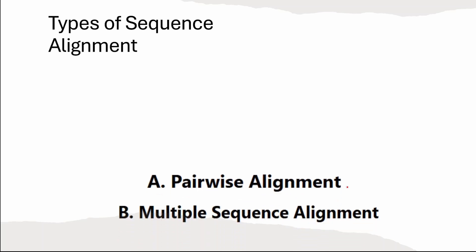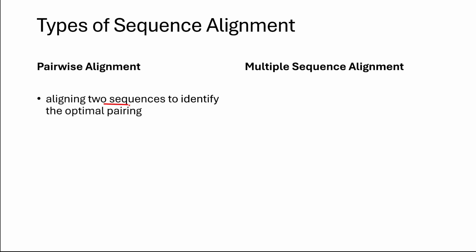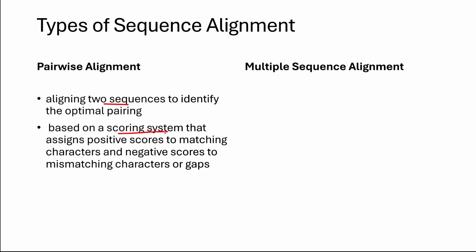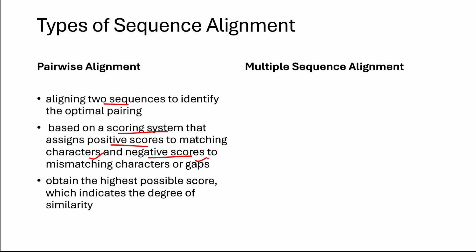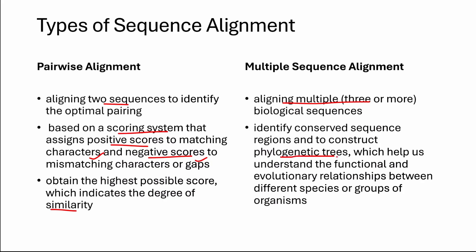Now let's look at the types of sequence alignments. We have two types: pairwise and multiple sequence alignment. In pairwise alignment, we compare only two sequences — not more and not less than two. We use a scoring system where a match gets a positive score while a mismatch or gap receives a negative score. This is done to measure similarity between the two sequences. In multiple sequence alignment, we align more than two sequences — DNA or proteins — and it is very efficient for generating phylogenetic trees.